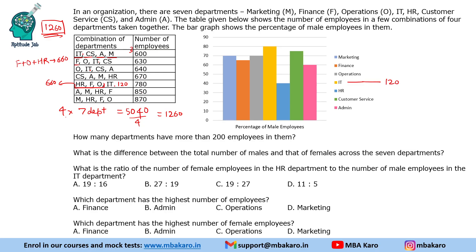Next, taking finance, operations, IT, and CS: the missing departments are HR, marketing, and admin, which together total 630 (since 1260 - 630 = 630). Looking at the combination containing HR, marketing, and admin, that is 630. Adding finance makes it 850, so finance will have 220 employees to bring the total to 850.